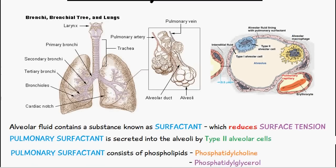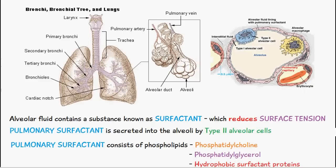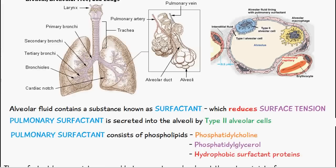Pulmonary surfactant consists of phospholipids — specifically phosphatidylcholine and phosphatidylglycerol — as well as hydrophobic surfactant proteins.